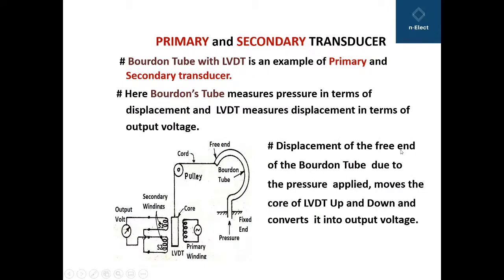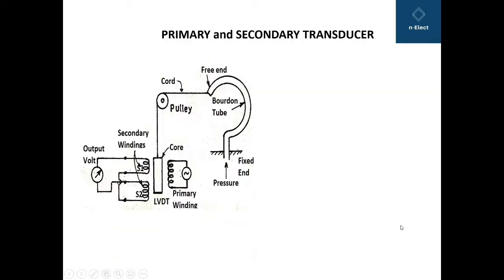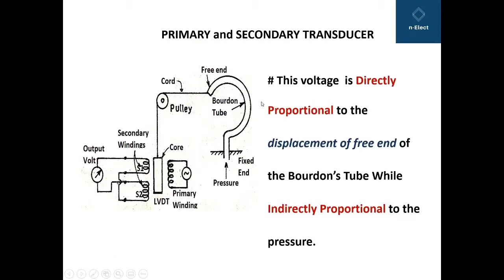Displacement of the free end of the Bourdon tube due to the applied pressure moves the core of the LVDT up and down and converts it into an output voltage. Thus, the output voltage is proportional to the displacement of the free end of the Bourdon tube, while this is indirectly proportional to the pressure. It means pressure is being converted into displacement of the free end, and that displacement is being converted through the core into the output voltage.